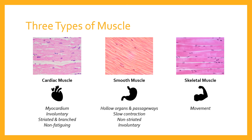Moving on to skeletal muscle — as the name suggests, it's for movement of the skeleton. This is why we sometimes refer to the musculoskeletal system, because muscles and the skeleton work in tandem. Skeletal muscle is the most common type of the three, making up approximately 40% of the body's overall mass. The key distinction from the other two types is that skeletal muscle is voluntary — you have conscious brain control over it. These are the muscles we use to move, play sport, jump, run, throw, and kick.